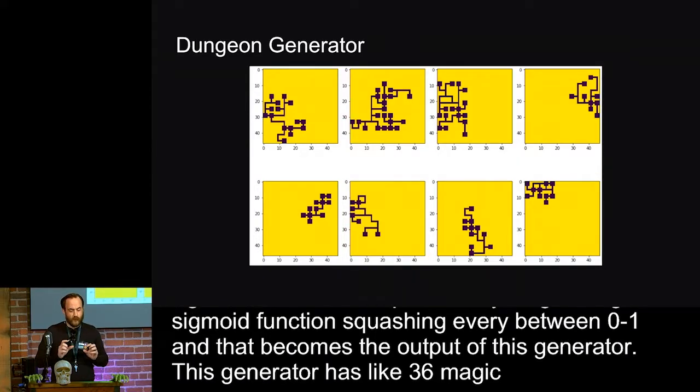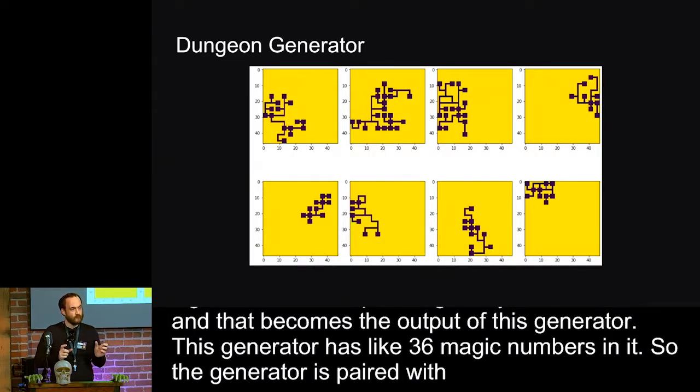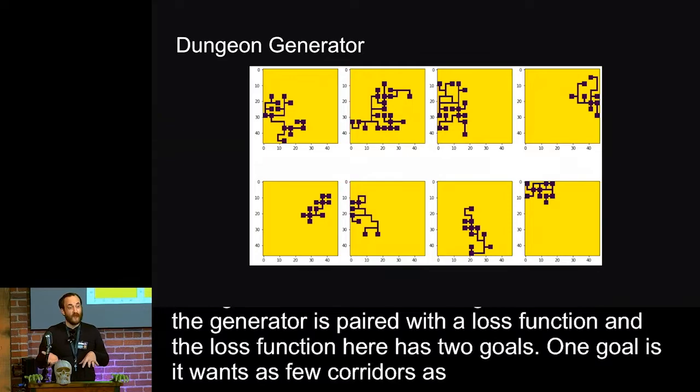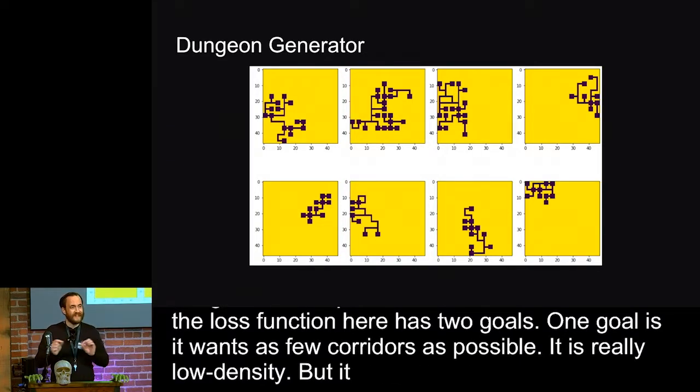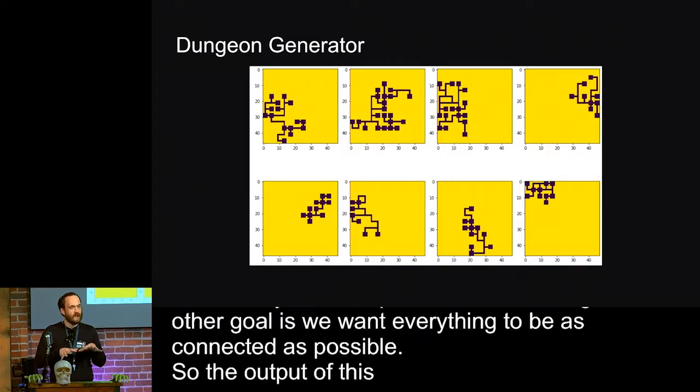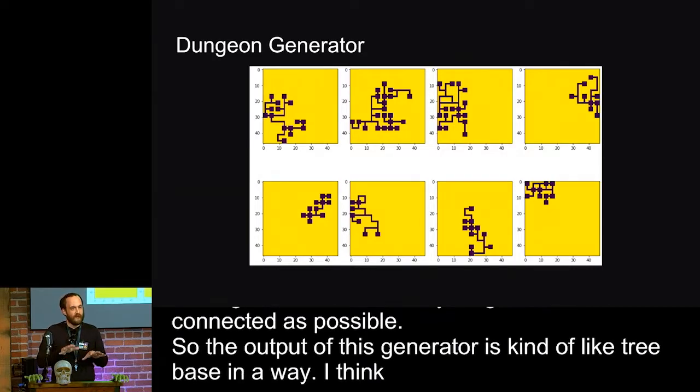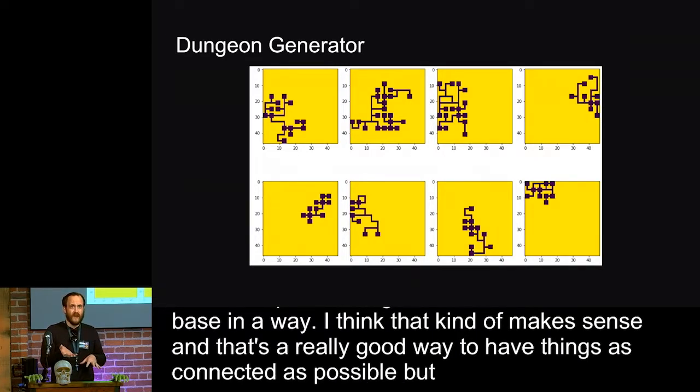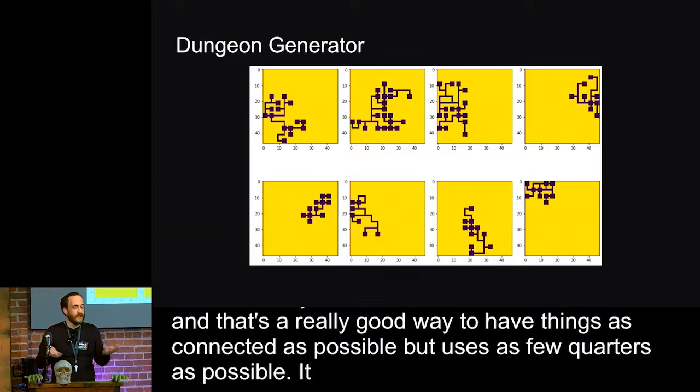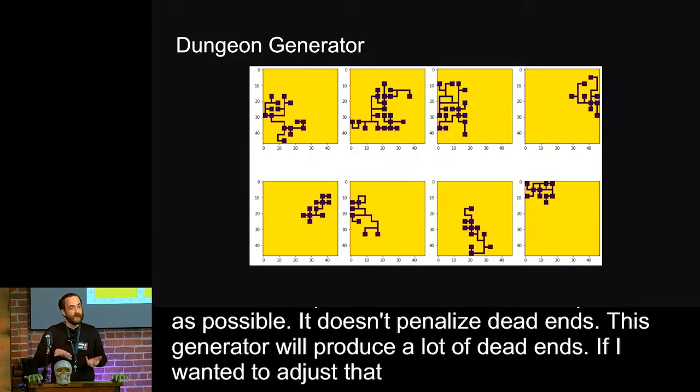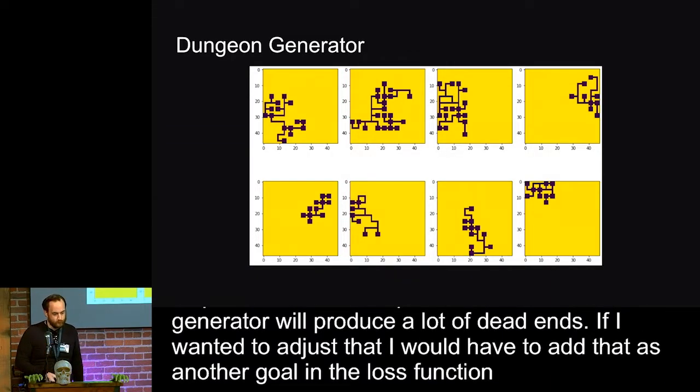And so the generator is paired with the loss function. And the loss function here has two goals. One goal is that it wants as few corridors as possible, so it wants really low density. But it's paired with another goal. And the other goal is that we want everything to be as connected as possible. And so the output of this generator is kind of tree-based in a way. I think that kind of makes sense. That's a really good way to have things as connected as possible but use as few corridors as possible. It doesn't penalize dead ends, so this generator will produce a lot of dead ends. If I wanted to adjust that, I'd have to add that as another goal in the loss function. But I wouldn't have to change the generator at all. We'd find new magic numbers that satisfied it.